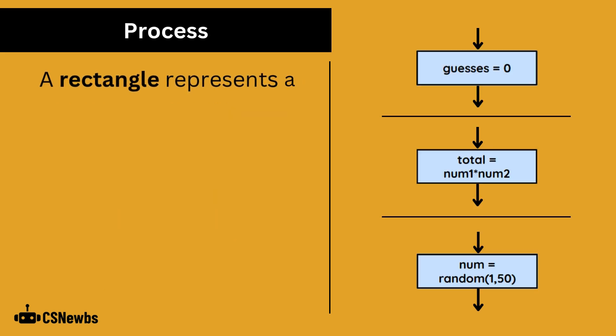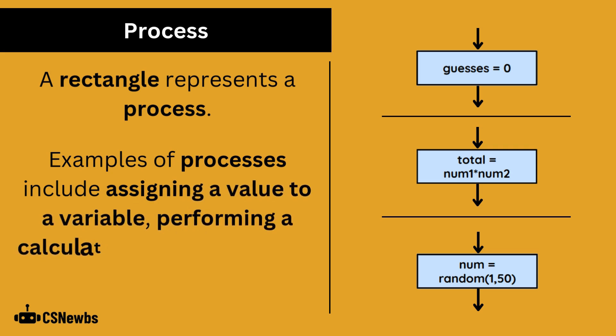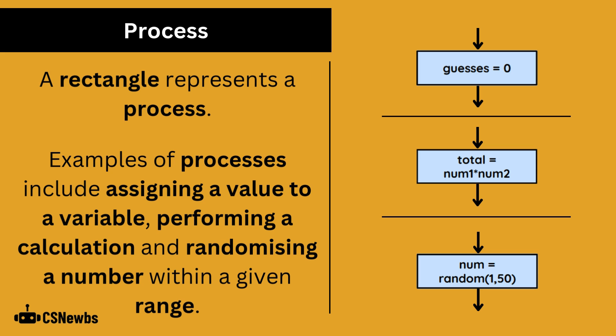A rectangle represents a process. Examples of processes include assigning a value to a variable, performing a calculation, and randomizing a number within a given range.